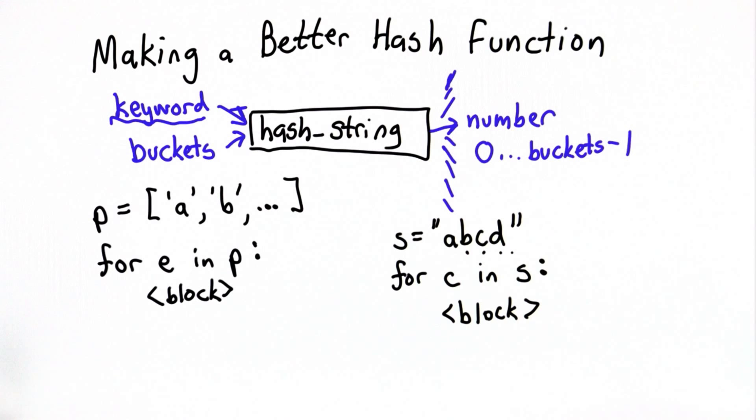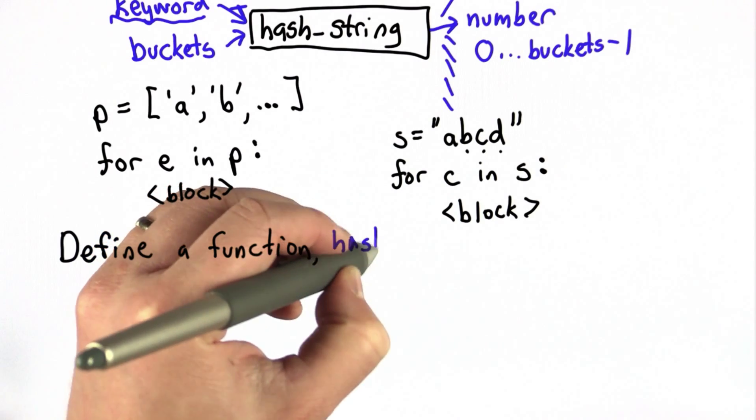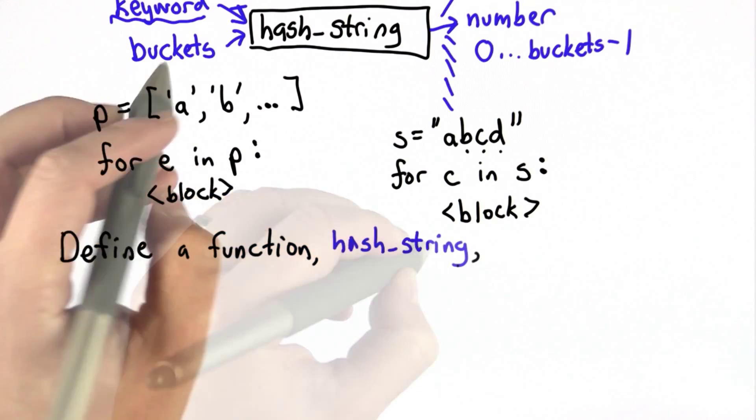If you remember how we turned single letter strings into numbers and modulo arithmetic, then I think you know enough to define a much better hash function. So for this quiz, your goal is to define a function hash_string that behaves like this.